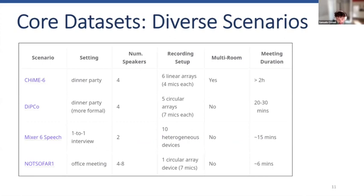Let's look at the core datasets. We focus on diverse scenarios, and this year we have a lot more diversity because of having not-so-far-one. The number of speakers can vary quite a lot, from two to eight. The recording setup varies a lot: CHiME 6 is multi-room with six linear arrays and four microphones each; DiCo is in a single room with five circular arrays; and not-so-far-one is just one meeting room with one circular array device. Meeting duration also varies a lot, from two hours down to six minutes.